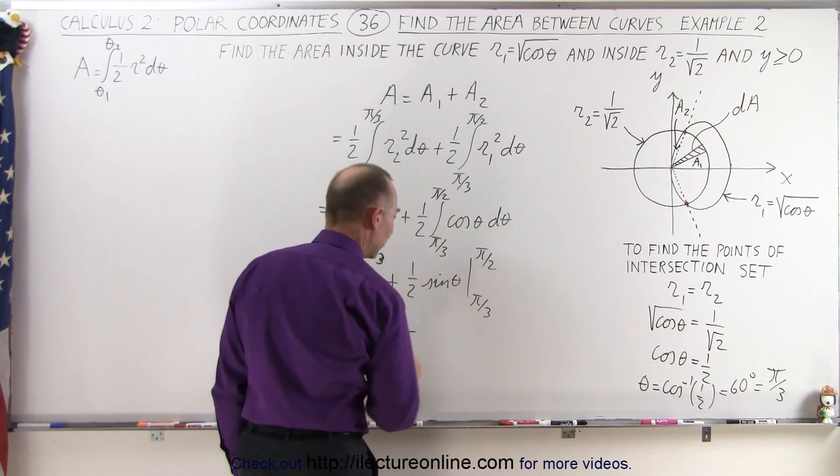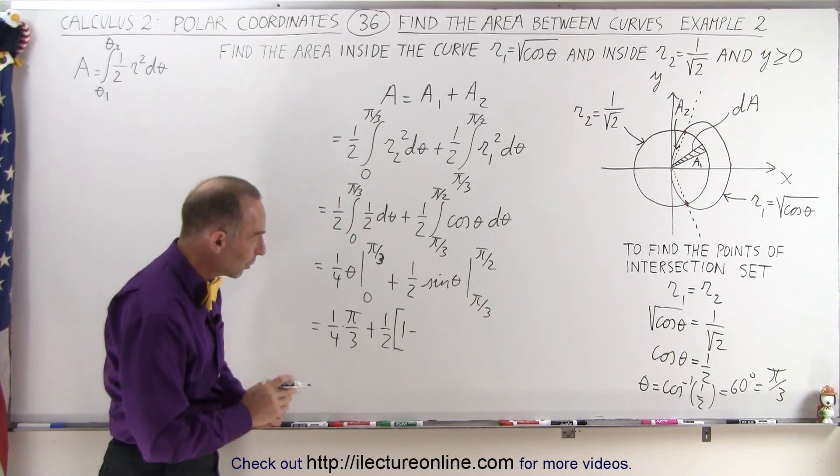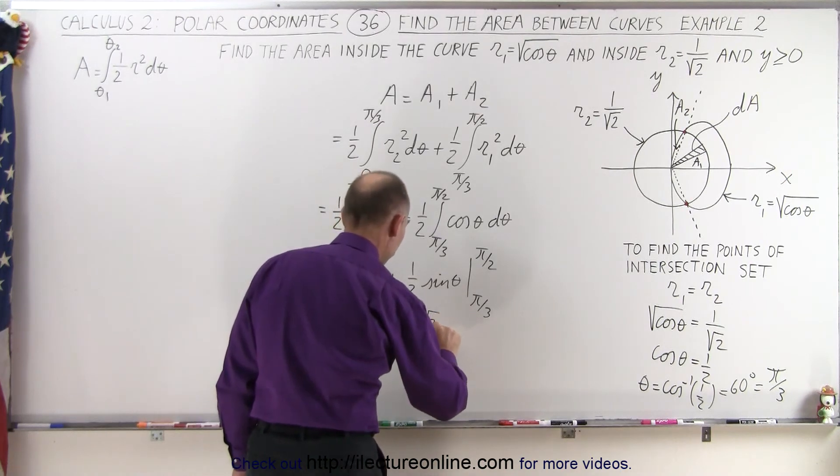Minus, when plugging the lower limit, the sine of pi thirds, that's 60 degrees, that would be the square root of 3 over 2.